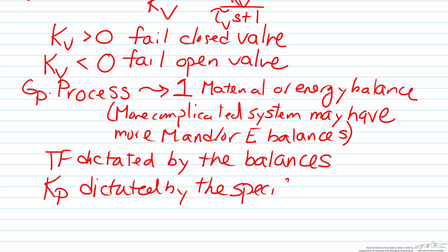Process gain Kp is dictated by the specific process. In some cases the gain will be positive, so an increase in the manipulated variable will cause an increase in the controlled variable, very similar to the example we have here where if I increase the steam flow rate, I am going to increase the temperature of the process fluid.